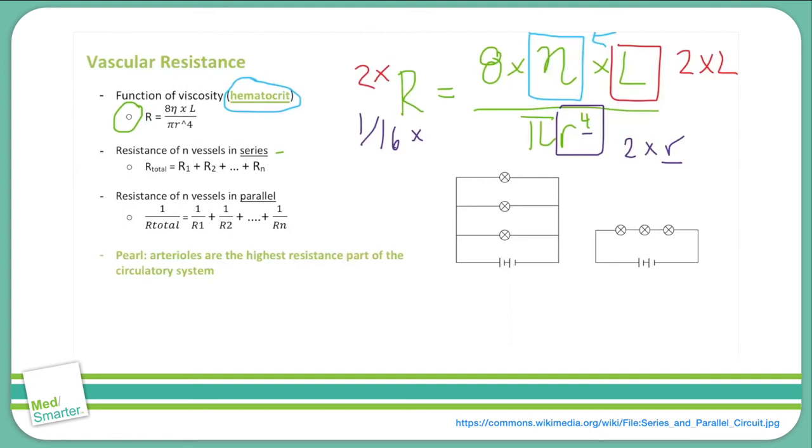You can see examples of series and parallel vessels down here. Here are some in series and here are some in parallel. Now you might recall from studying physics that there are formulas that help you calculate the total resistance for circuits that are in series and in parallel. And the good news is these same formulas apply to vascular resistance.